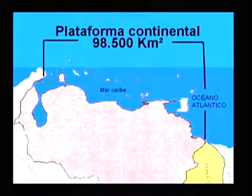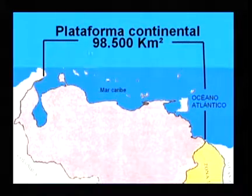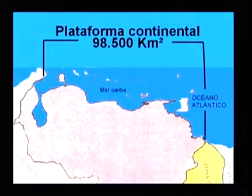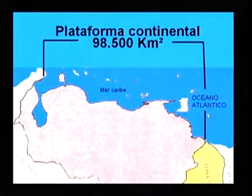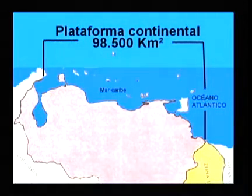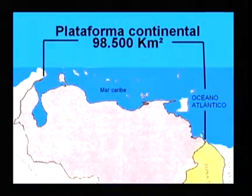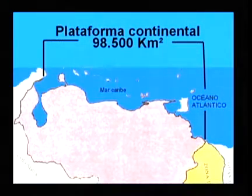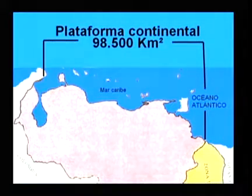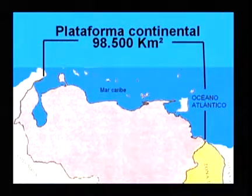Comenzamos con la superficie de la plataforma continental. Tomamos como punto de referencia la península de Castillete hacia el oeste hasta Punta Playa hacia el este, correspondiente al océano Atlántico. Allí vamos a tener una superficie de 98.500 kilómetros cuadrados. La plataforma continental es la prolongación del territorio venezolano por debajo de las aguas, lo que conocemos como tierras emergidas. Por lo tanto, tenemos derecho a este espacio marítimo de 98.500 kilómetros cuadrados.